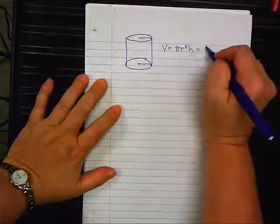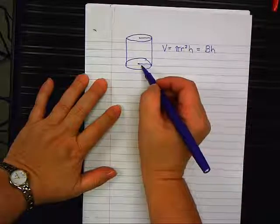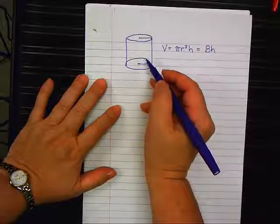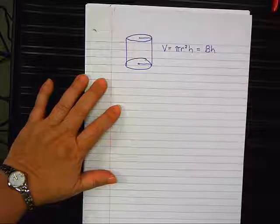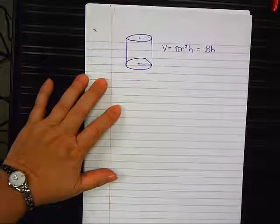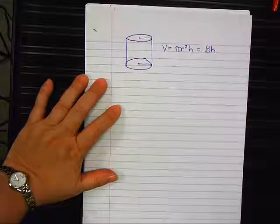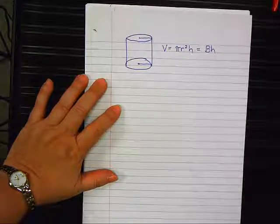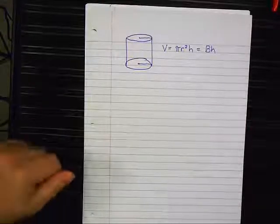Now some teachers teach it big B times H. Because a cylinder is just a stack of tiny, thin circles all on top of each other. Agreed? Like poker chips, or communion wafers, or something like that, that are really thin, that you stack them all up and make a cylinder. Agreed? Like Girl Scout cookies.